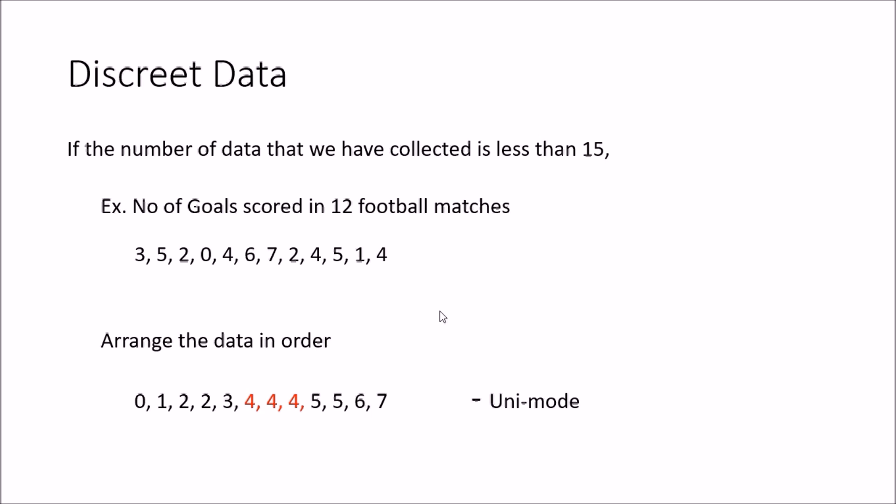There can also be systems with more than one mode. In this next example, the number of goals scored in 11 football matches: once you arrange the data in order, you can see that the number two is repeated twice and the number four is also repeated twice. That means there are two modes — mode one is two and the other mode is four. Therefore this is a bimodal system, where you have two modes in the dataset.